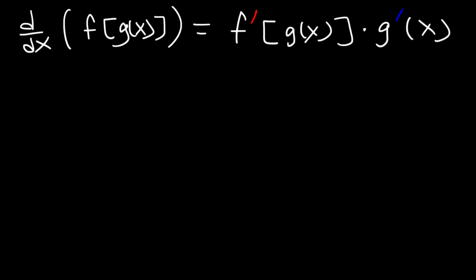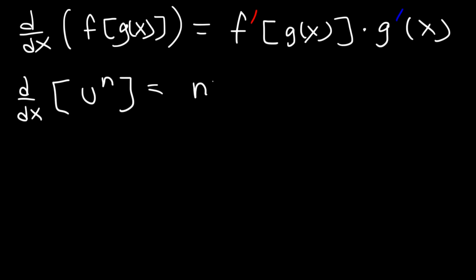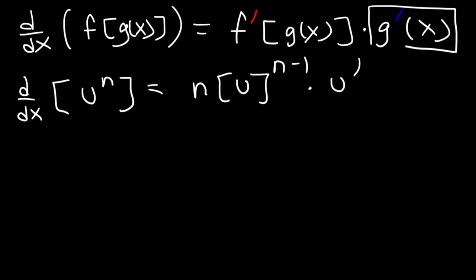If you follow this process, you're going to get the answer right. If we have a function u raised to the n, where u is another function in terms of x, using the chain rule and the power rule combined, it's going to be n times u — keep that the same — raised to the n minus 1, times the derivative of what's on the inside. That's the general power rule formula with the chain rule combined. So never forget to multiply by the derivative of the inside function.